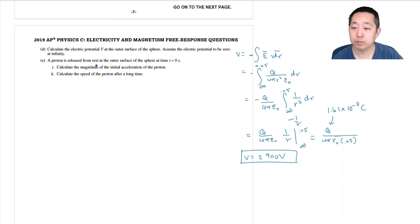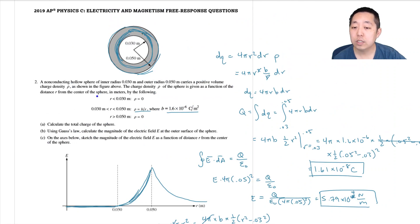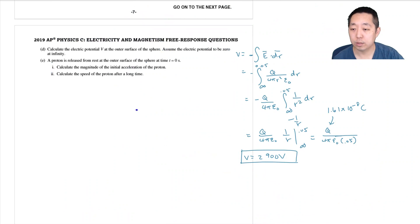And a proton is released from rest on the outer surface of the sphere at time t equals 0 seconds. Calculate the magnitude of the initial acceleration of the proton. Calculate the speed of the proton after a long time. So I think in general I was making sure this is a positive charge density. Yeah, positive volume charge density. Just to double check that. And so, the proton's going to go away. So, the way you want to do the initial acceleration, I need to know the force on the proton. Force equals ma. The force is due to the electric field. So that's Q times the electric field is equal to mass times acceleration. So the acceleration is equal to Q times the electric field over m.